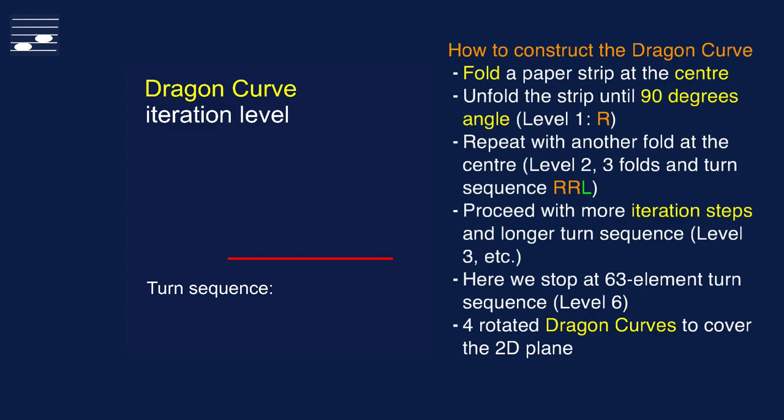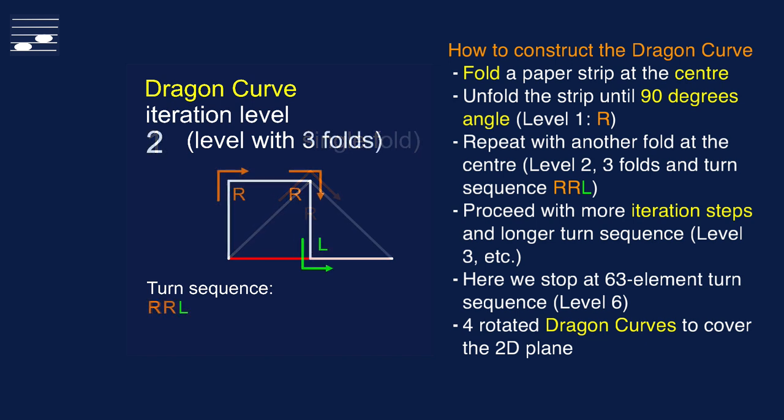I'll demonstrate how to construct this fractal pattern. The well-known approach is to take a paper strip, fold it at the center and then unfold it until you've reached a 90 degrees angle. That's the level 1 curve, with a single fold and moving from left to right, you'll see a right turn. By repeating the folding at the center process, we reach level 2 with 3 folds and the turn sequence has become RRL. Just follow the arrows in the image.